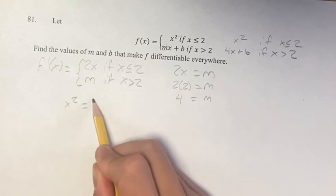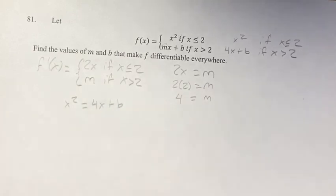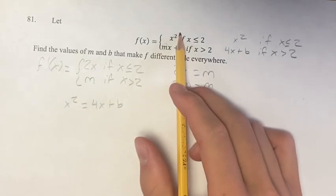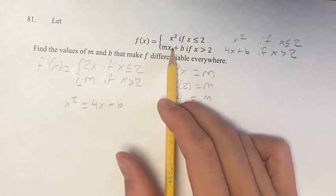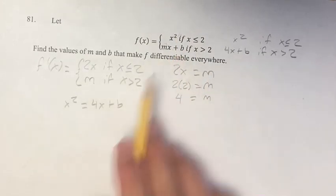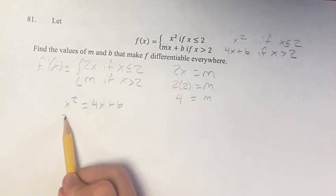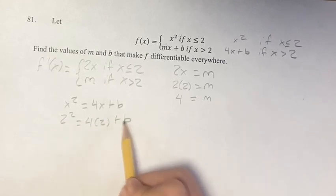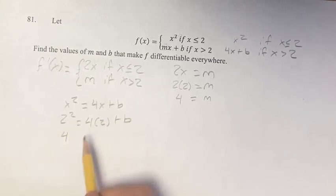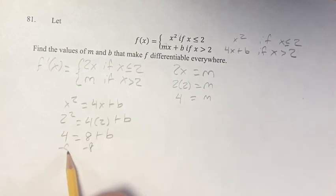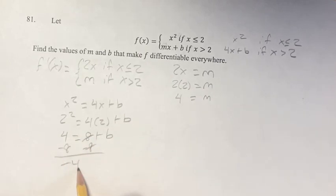x squared has to equal 4x plus b when x equals 2. Again, it's continuous here and here, but it has to be continuous everywhere for it to be differentiable everywhere, since being differentiable implies that it's continuous. So when x equals 2, 2 squared equals 4 times 2 plus b. 2 squared is 4, 4 times 2 is 8 plus b. Subtracting 8 from both sides, we get negative 4 equals b.